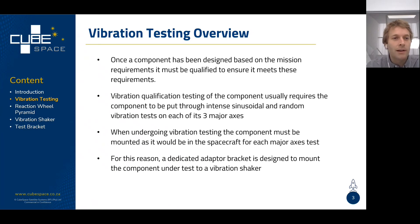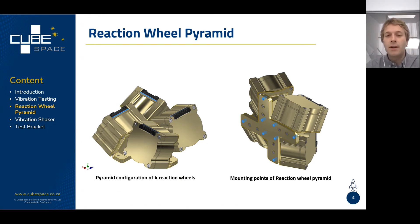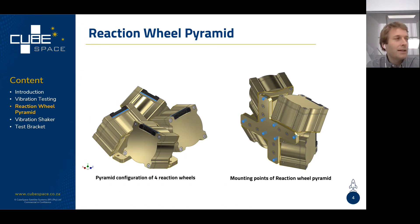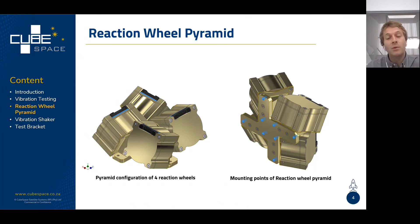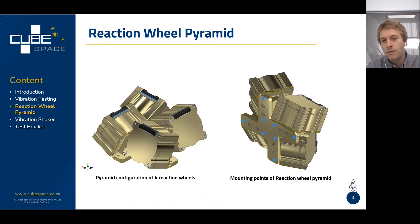In this case, what we're looking at is a reaction wheel pyramid. This is a design of our own, done to meet certain customer requirements. Basically, we have four mass components mounted in a pyramid configuration — that's a specific angle the wheel is tilted at, with four of them mounted together. On the right, you can see the blue holes highlighted, which are used to mount the structure to the satellite.